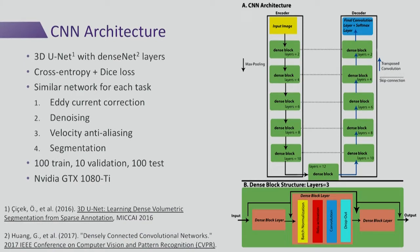We're using a single architecture for our convolutional neural network and doing four separate networks, one for each of the processing steps. This is a 3D U-Net with dense net layers substituted for the original convolutional layers, and our loss function is cross entropy plus a dice loss. Each task is essentially doing some type of segmentation or categorization of voxels. We use 100 datasets for training, 10 for validation, and 100 for testing, on an NVIDIA GTX 1080 Ti.